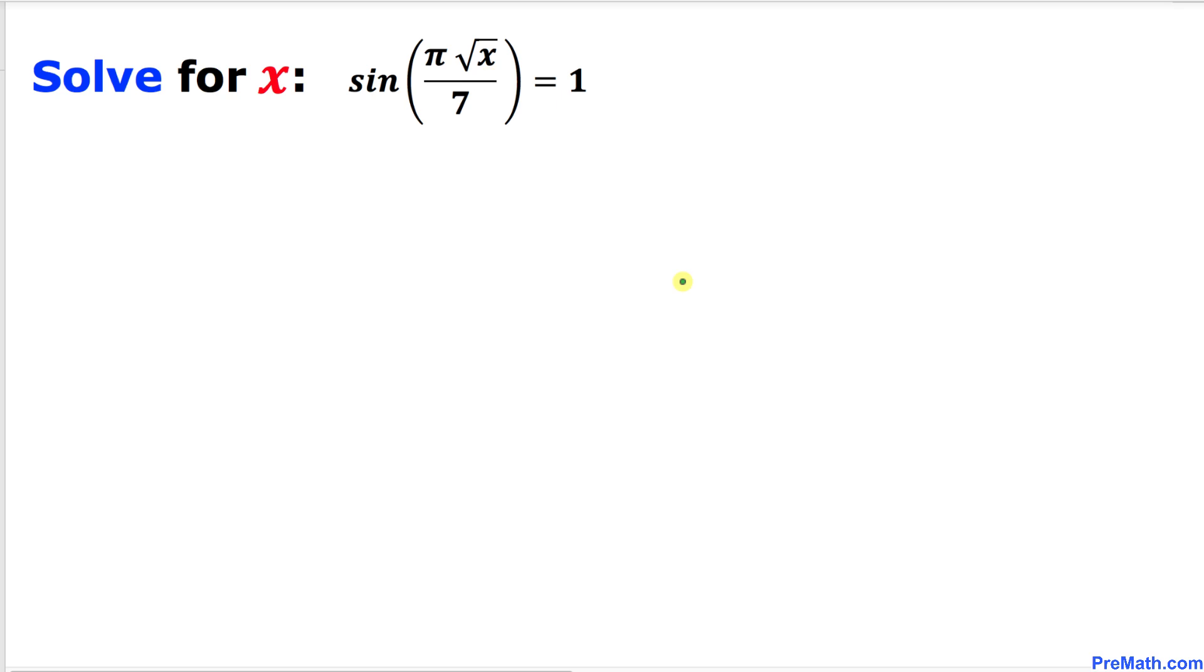Let's go ahead and get started with the solution. Let's recall this fact: if sine of x equals 1, then x has values pi over 2 plus 2k pi, where k is an integer.